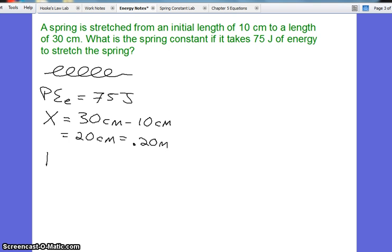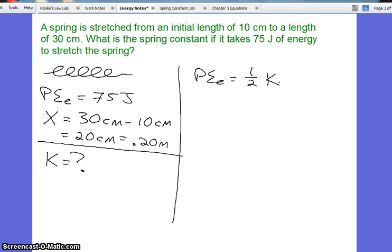We want to find what is the spring constant. So we go to our equation that we just had. The elastic potential energy is one-half that spring constant times the distance stretched squared. Then we put in our substitutions, 75 joules is equal to one-half times K times 0.2 meters squared.